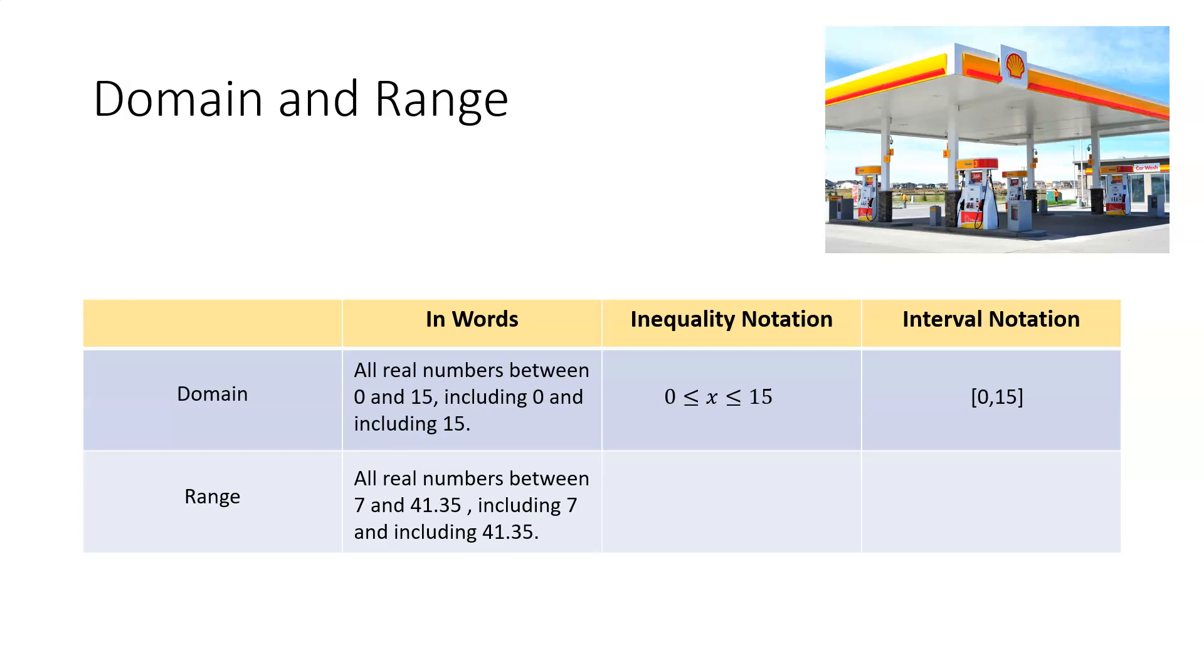In inequality notation, it's going to look similar to the domain, except in the middle we're going to put f of x because we're representing our output values. And our range is going from $7 to $41.35.